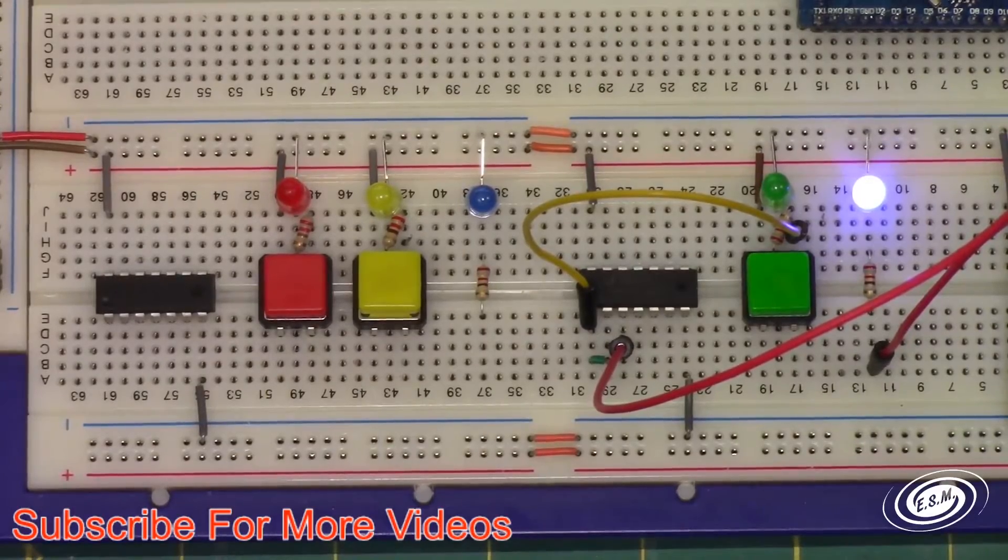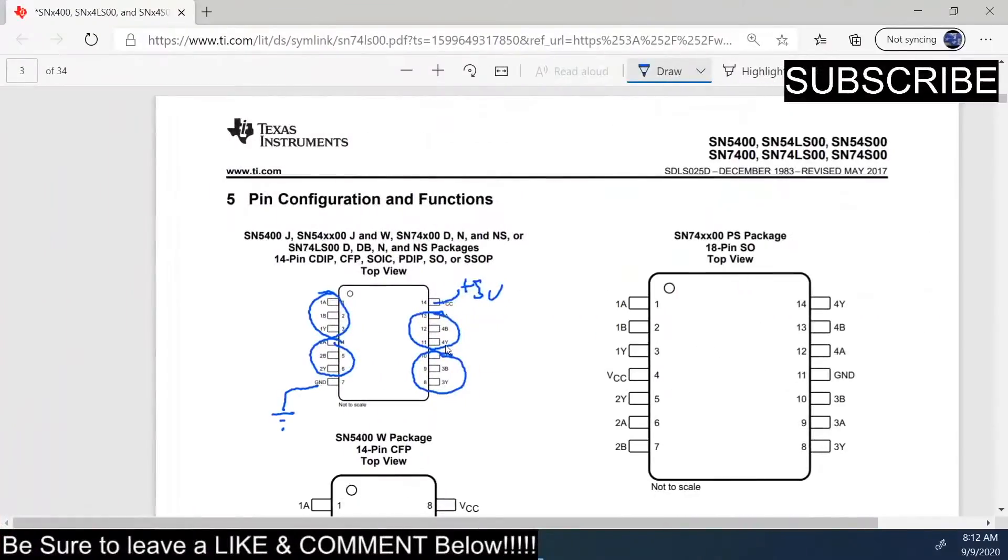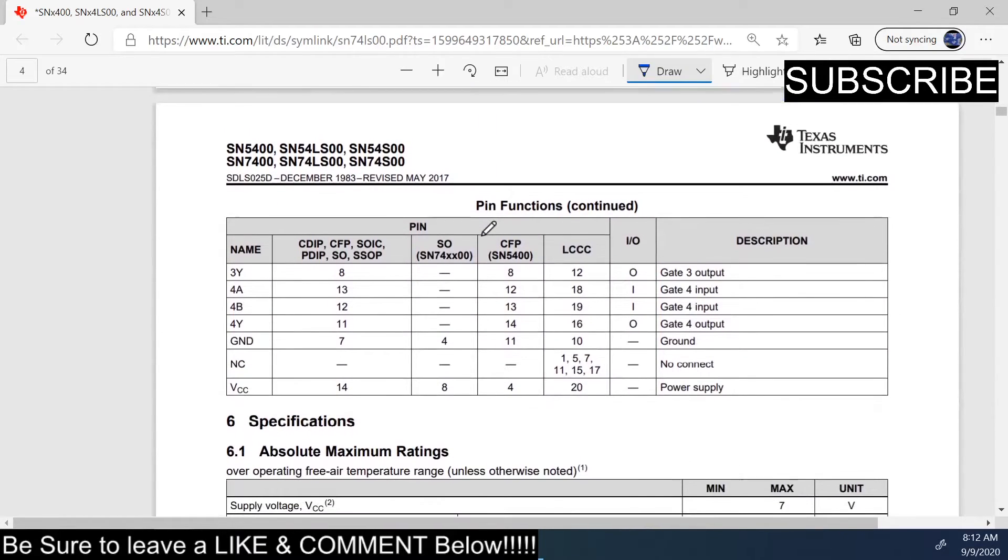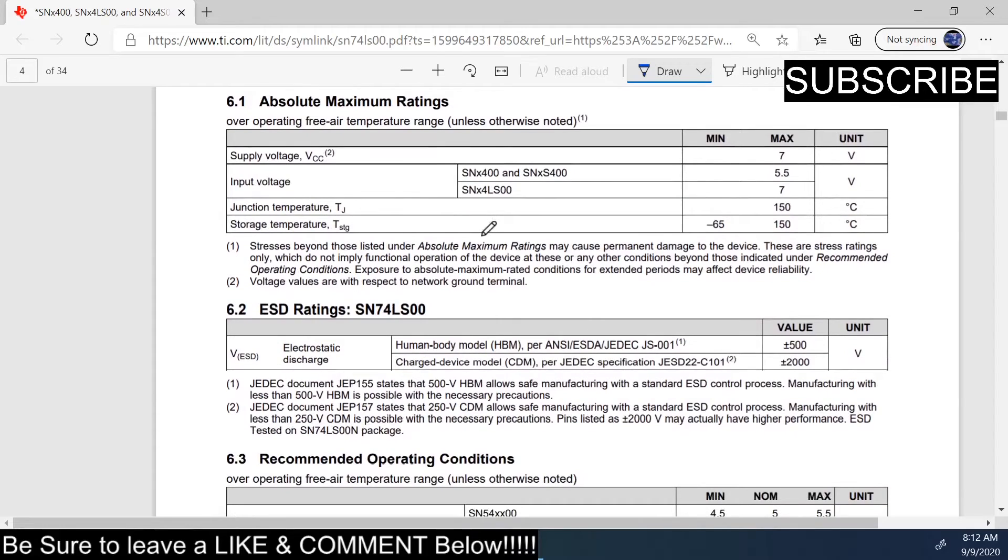We'll come back over here to the datasheet and wrap it up with some specifications. So if you look here, here is your pin configuration for your LS. There are 74 different packages. So you have the supply voltage and max you can have is 7 volts. If you have the LS series chip, the max is 7 volts on the inputs. So when you're going to use that, you don't want more than 7 volts put in there.